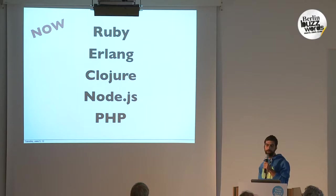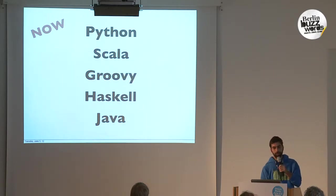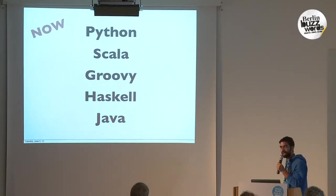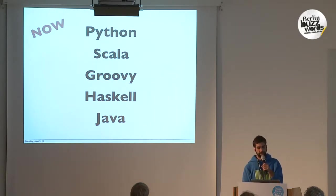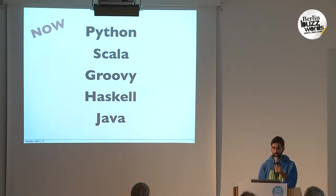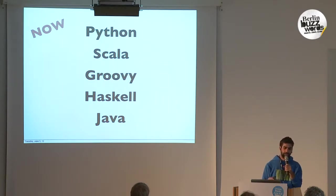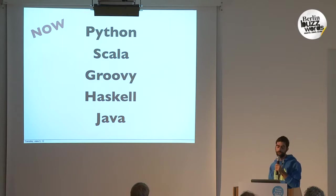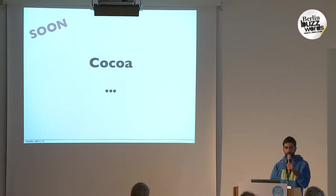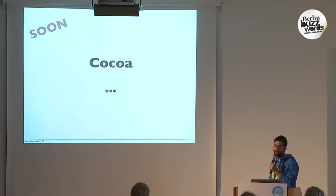Supported languages: we have Ruby, Erlang, Clojure, Node.js, PHP, Python, Scala, Groovy, Haskell, and Java — quite a nice list. Most of these support multiple language versions. For Java, it's just happening right now that we're supporting multiple versions as well. Other languages — whatever comes along, Cocoa, .NET, whatever people bring. It's an open source project, so anybody that wants to add something, and that also includes a new database.